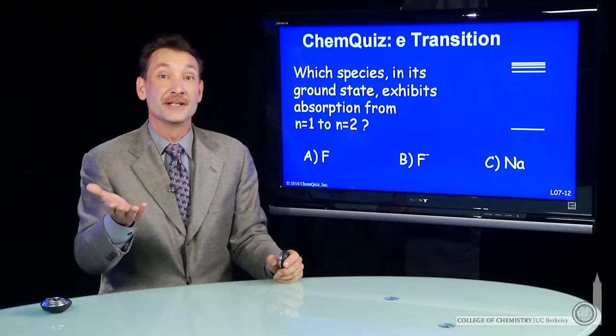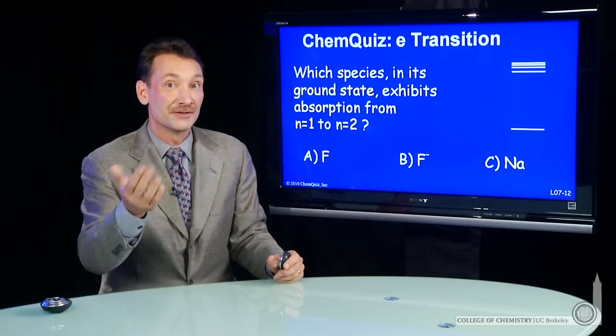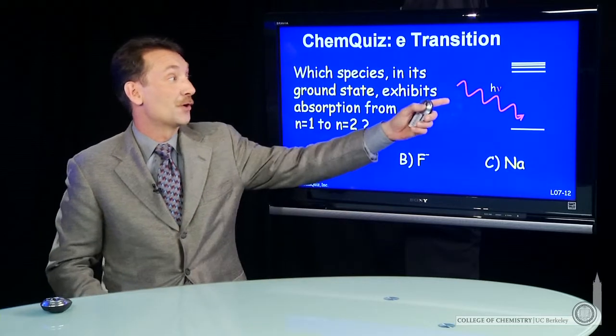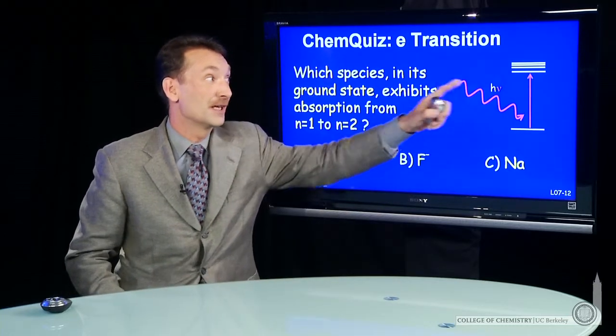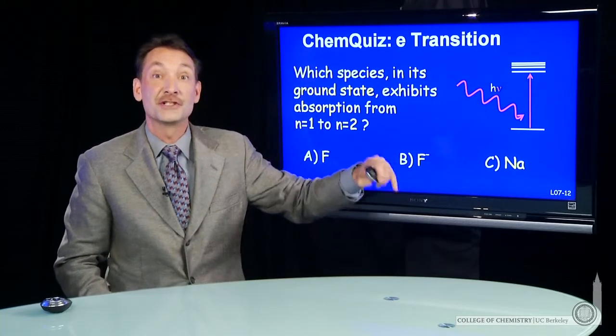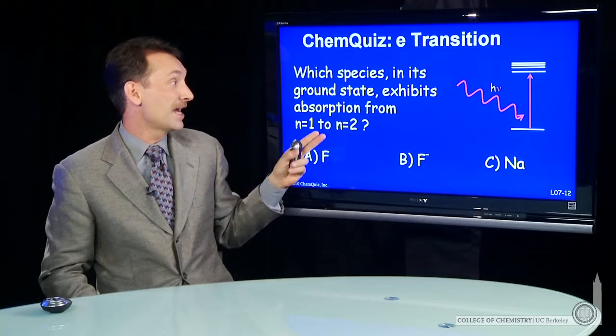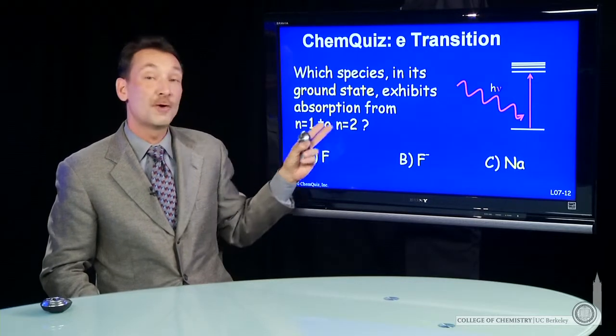We know electrons can absorb energy and change energy levels, going from one orbital to another in an atom. So if a photon is absorbed, we get a promotion of an electron from a low energy to a high energy state. Which species in its ground state exhibits absorption from n=1 to n=2?